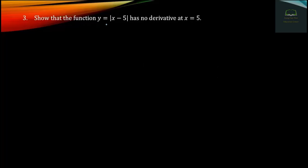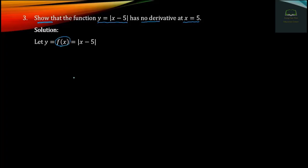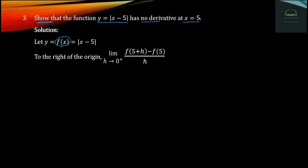Question 3 shows that the function y equals modulus of x minus 5 has no derivative at x equals 5. We check: importance, 4 plus 5, then 2.0 plus 5. This is the right-hand line. We'll see the left-hand side: 3 times zero plus 5 plus 4.